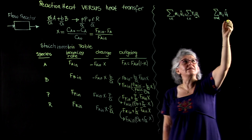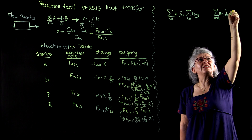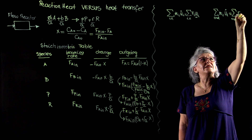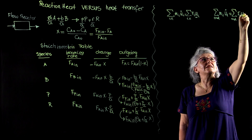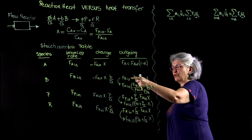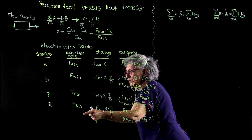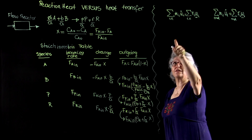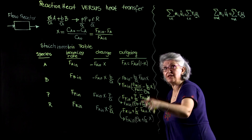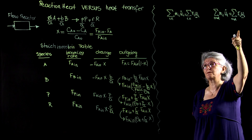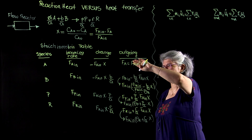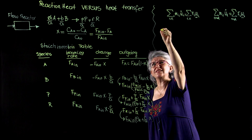Similarly for the outgoing stream: FI, HI with an underscore. I'm going to substitute FA terms for the incoming stream and FI terms for the outgoing streams. My flow reactor is a black box operating at steady state.